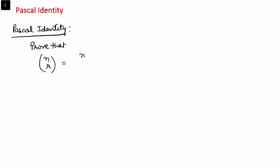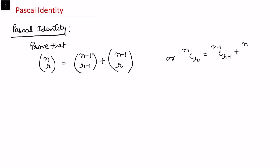In this video I'll be doing Pascal's Identity proof, and I'll have two approaches: one is an algebraic proof and another is a combinatorial proof. So let me first write what Pascal's Identity is. It involves combinations, and here we'll have to prove that n choose r, or ncr, is the same as n minus one choose r minus one plus n minus one choose r, or written as n-1 C r-1 plus n-1 C r, where n and r belong to natural numbers and r is less than or equal to n.